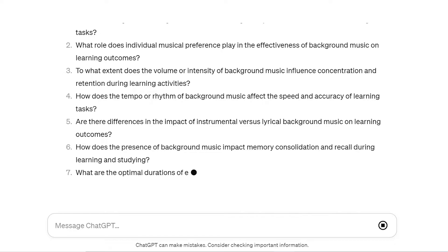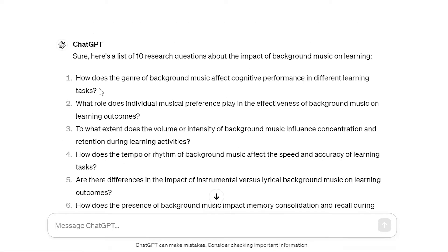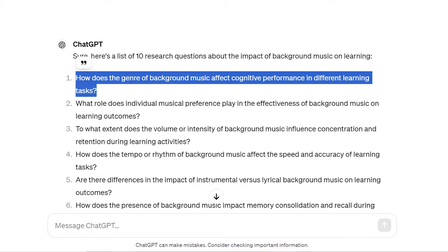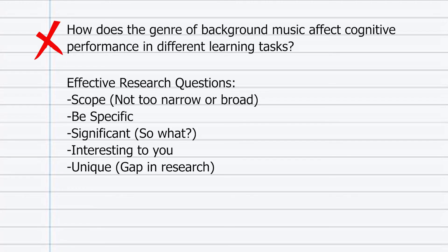ChatGPT has created a list of interesting research questions that approach this topic from various directions. The one I'm most interested in is the first one: How does the genre of background music affect cognitive performance in different learning tasks? However, you should not copy-paste this research question because it would go against the College Board policy on how to use AI. Also, this research question needs some refining. Effective research questions have appropriate scope — not too narrow or broad — they are specific, significant (addressing the so-what factor), interesting to you, and unique, addressing some kind of gap in research.